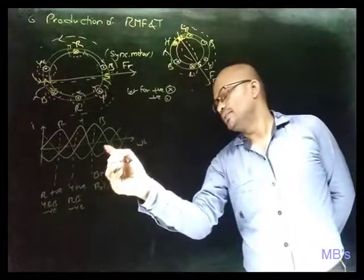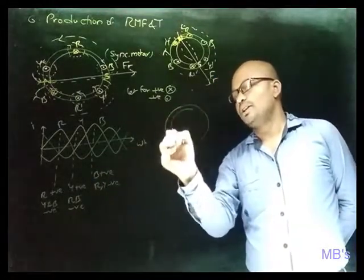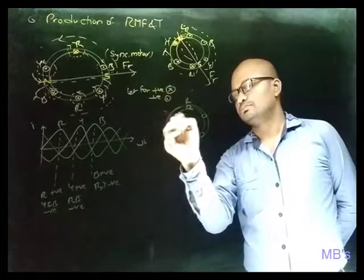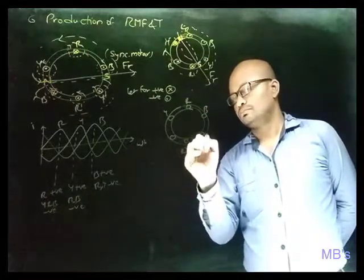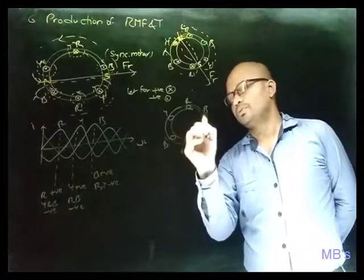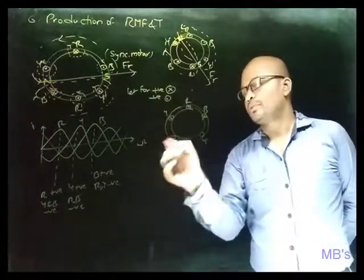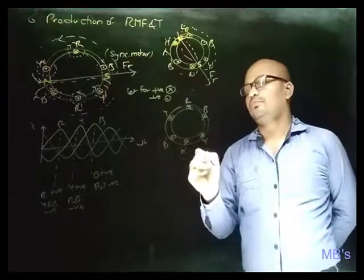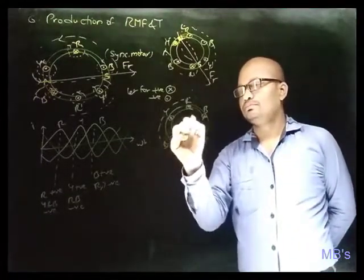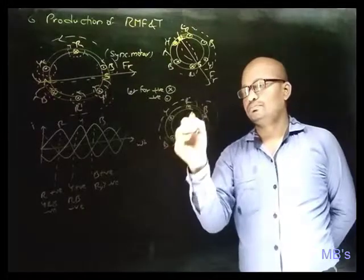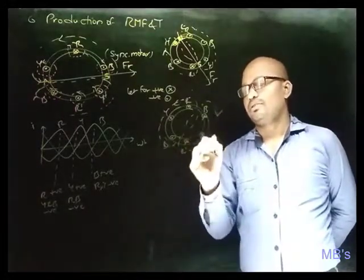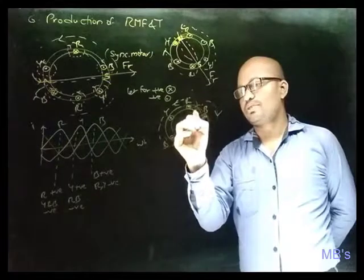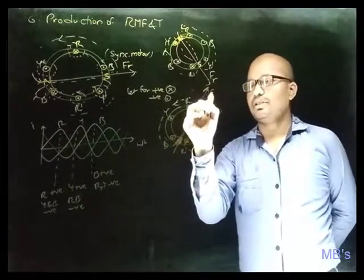Consider the third instant: B is positive and Y and R are negative. B positive means cross; R and Y are negative, meaning dot. So this is dot, this is cross, and this is cross. The resultant shows anticlockwise and clockwise directions, so this portion is acting as north pole and this portion is acting as south pole. The resultant field is in this direction.